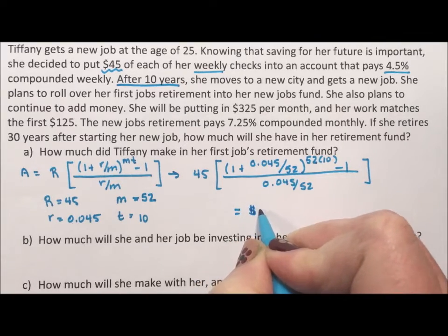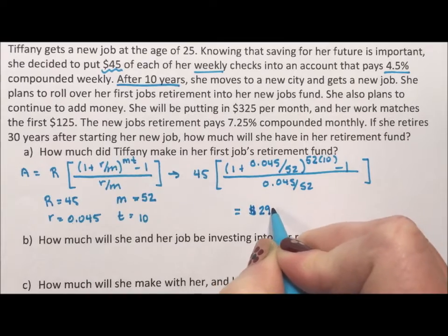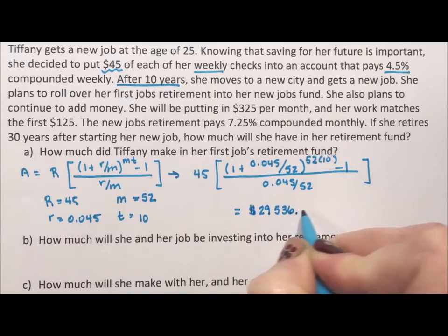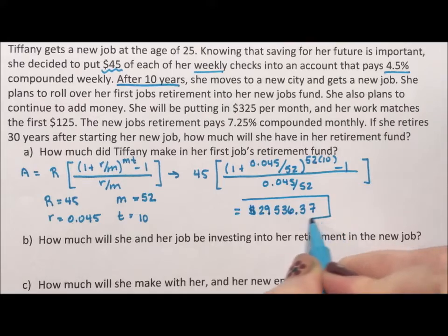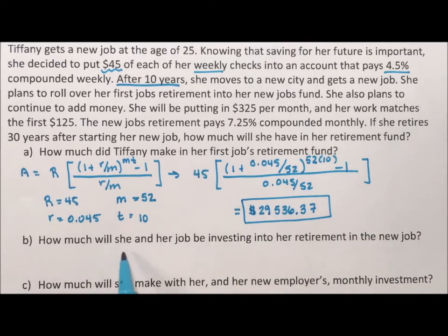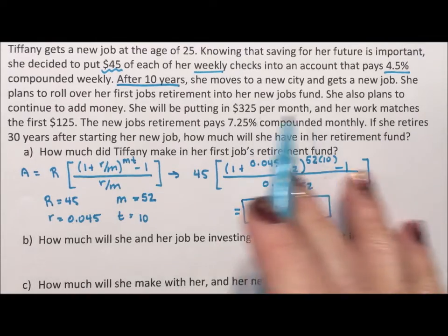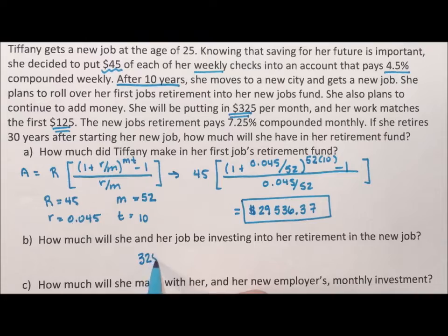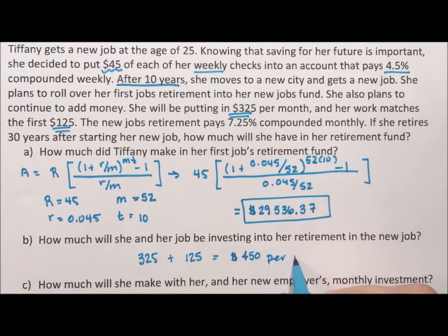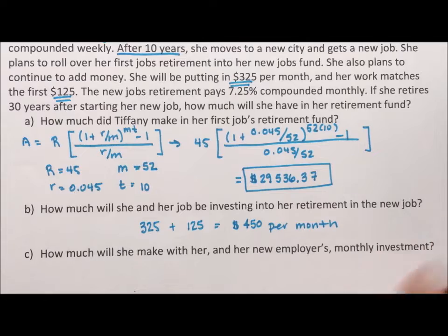This is her first job. How much will she and her job be investing into her retirement in the new job? In her second job she's putting in $325 and her work matches the first $125, so we take the 325, we add the 125 that her work is adding in, and we find out that together they're putting in $450 per month, which is really nice.